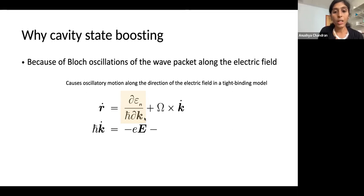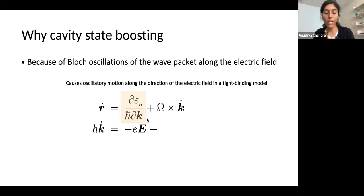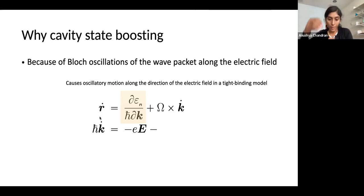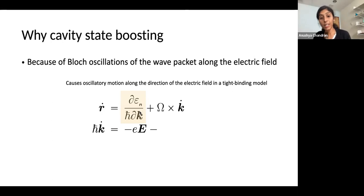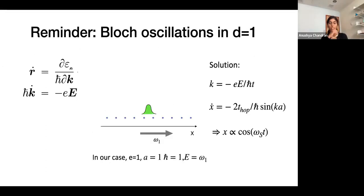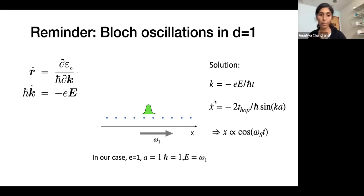Why on earth does it happen? Can we understand it building off the wave packet dynamics from yesterday? The answer is yes. To do that, we should look at a part of the wave packet dynamics we introduced yesterday that I actually completely ignored — the group velocity part for the wave packet in the synthetic lattice. What this group velocity does is cause oscillatory motion along the direction of the electric field. This goes by the name of Bloch oscillations.